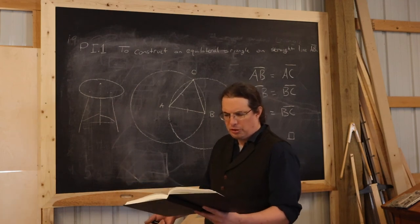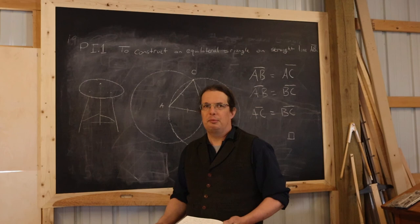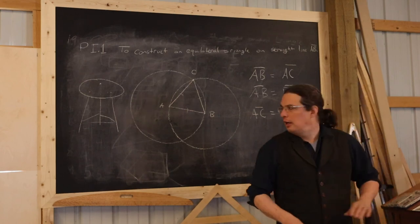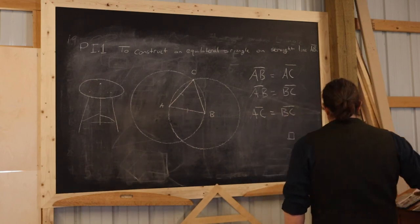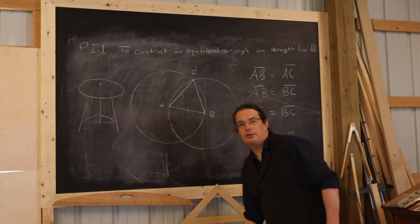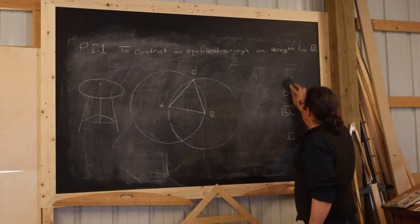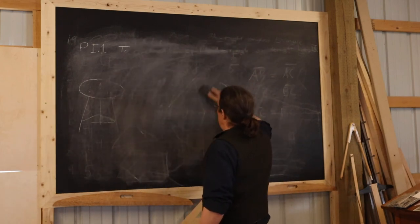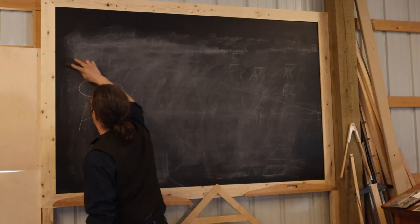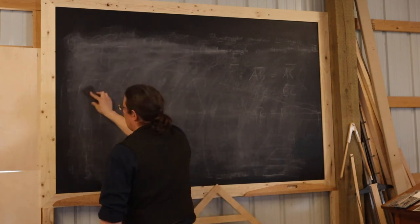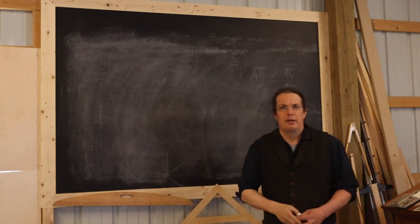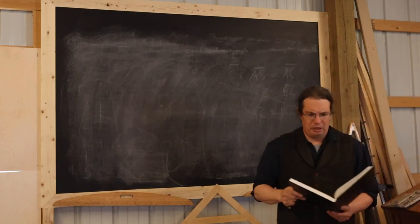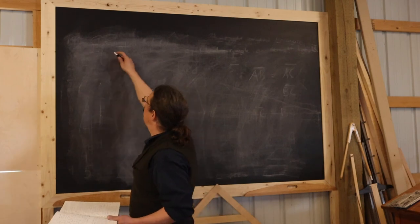So we're going to spend some more time looking at — not proving, but just looking at — some propositions about line segments and then more on triangles. And that'll wrap up this tutorial. These are going to be utility propositions that we use as we're building up our more sophisticated design techniques for pre-industrial furniture design. So I'm going to list off the next two propositions of Euclidean geometry.